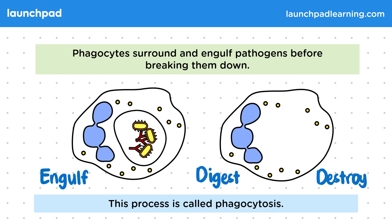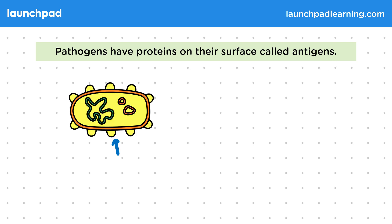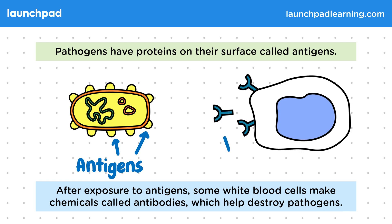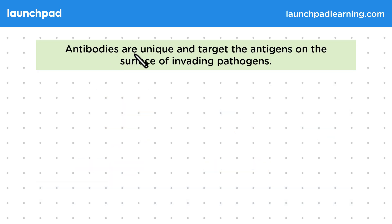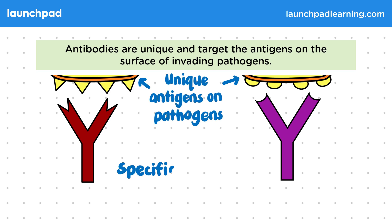Pathogens have proteins on their surface called antigens. The small yellow semicircles in this diagram represent the antigens on the surface of pathogens. After exposure to antigens, some white blood cells make chemicals called antibodies which help to destroy pathogens. In biology, antibodies are often represented in diagrams by a Y shape. The shape of these antibodies is complementary to the antigens. Antibodies are unique and target the antigens on the surface of invading pathogens, and this means antibodies are specific to a particular pathogen — we call this our specific immune system.